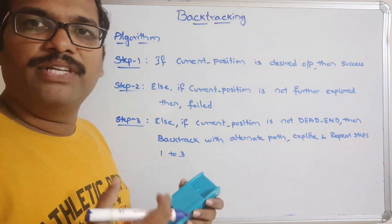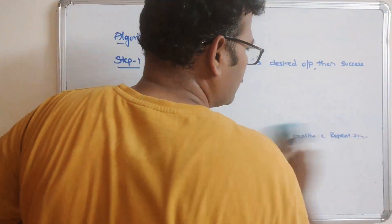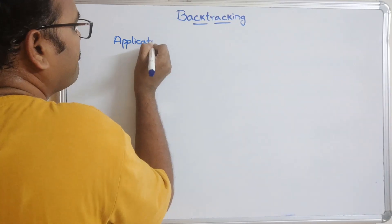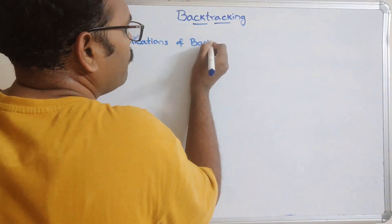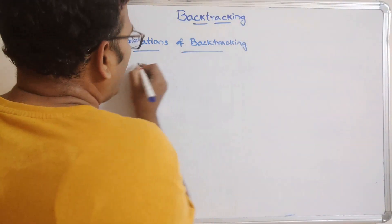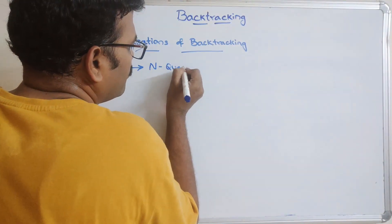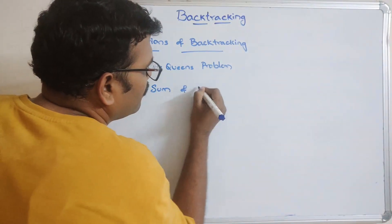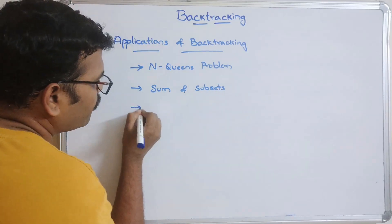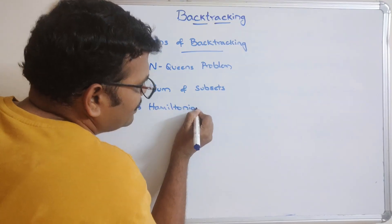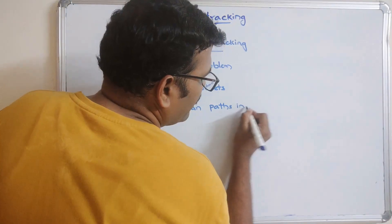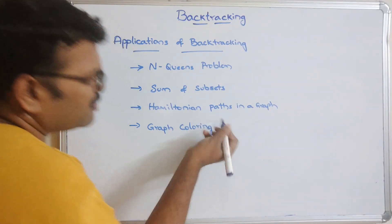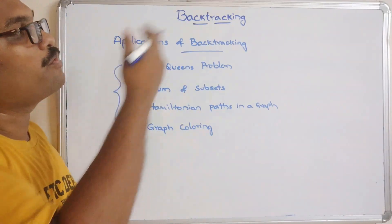Now let's look at the applications of backtracking. Using backtracking we can solve: the N-Queens problem, the sum of subsets problem, finding Hamiltonian cycles or Hamiltonian paths in a graph, and the graph coloring problem, among others.